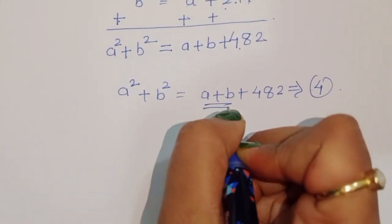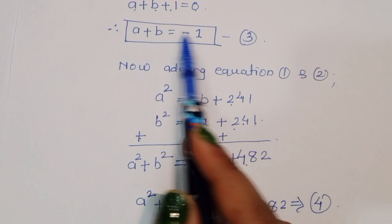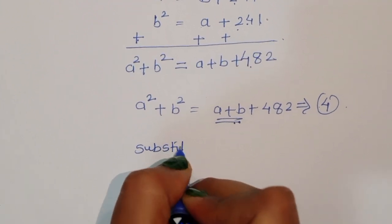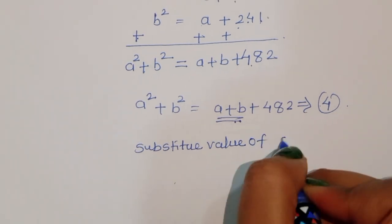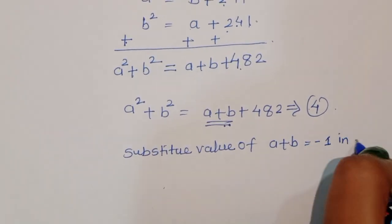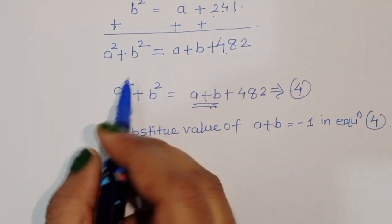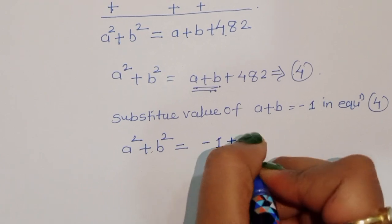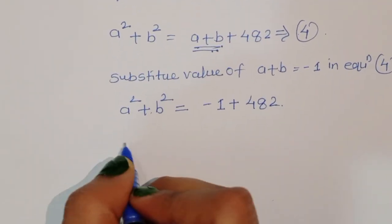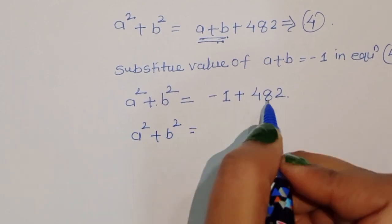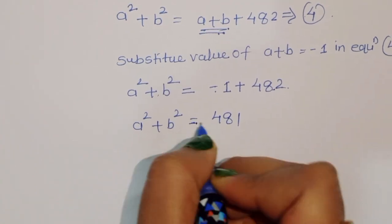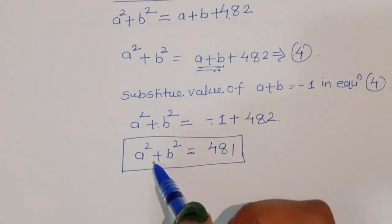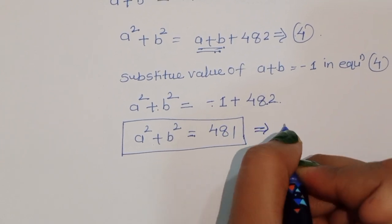We already know the value of A plus B from equation 3, which is minus 1. Substituting A plus B equals minus 1 into equation 4: A squared plus B squared equals minus 1 plus 482 equals 481. This is equation 5.